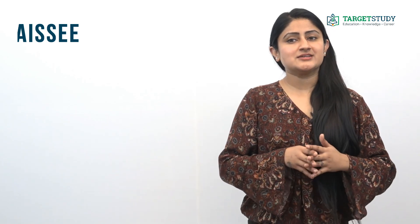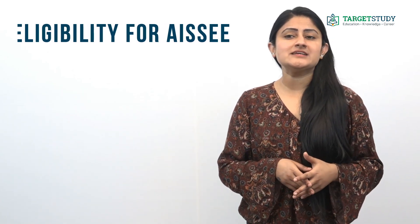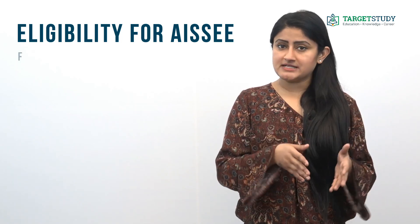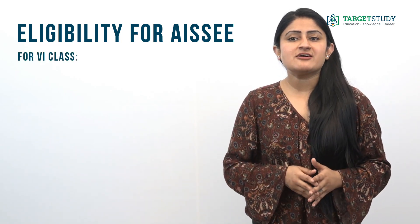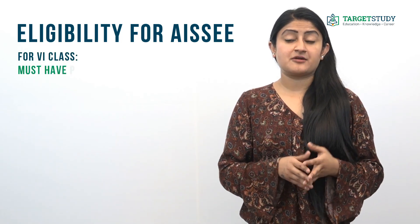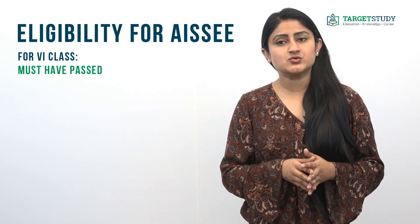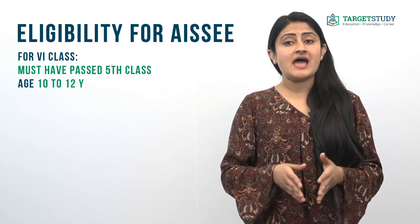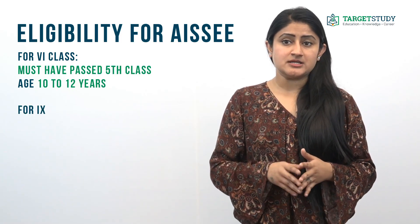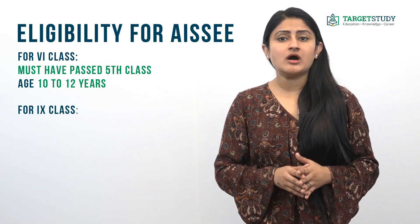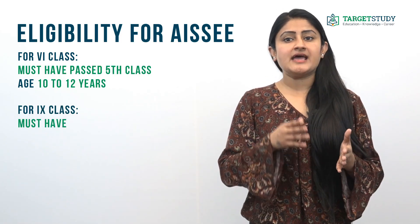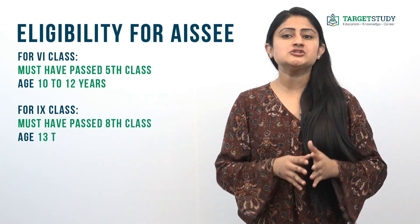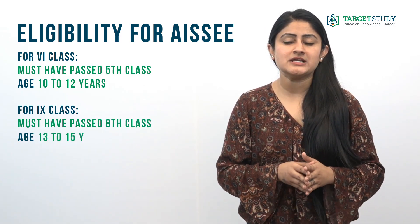What are the eligibility conditions for taking the All India Sainik School Entrance Exam? For sixth class, students must have passed their fifth class from a recognized school. As far as age is concerned, boys who are between the age of 10 and 12 years as on 31st March of the year are eligible to appear in this exam.